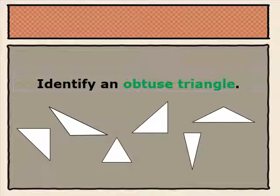Now take a moment to identify the obtuse triangles from the triangles below. We know that the obtuse triangles are these two triangles because each of those have an obtuse angle. One of its angles is greater than 90 degrees, with an opening that is larger than a right angle opening.